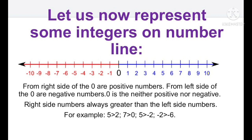Let us now represent some integers on a number line. Take a line and mark numbers on it — that gives you a number line. Zero is at the center; positive numbers are to the right of zero, negative numbers are to the left. Numbers increase going right and decrease going left. The right side value is always greater than the left side value. So the right side value is the bigger value and the left side value is the smaller value.